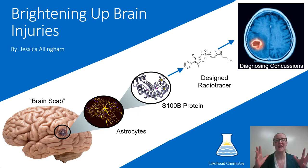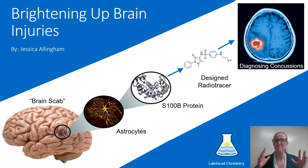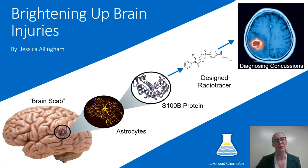PET depicts that energy density in a handy-dandy 3D image, using a big, bright red spot, as you can see in the picture at the top of my slide. And that big, bright red spot highlights where the injury is found in the brain, and it also lets us know whether or not an injury is present.